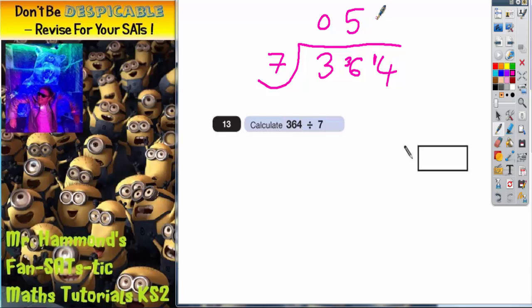7s into 14 is exactly twice, exactly 2 7s make 14, and there's nothing left over. So that's the answer. No 100s, 5 10s, and 2 units, so it's 52. 52 is the answer.